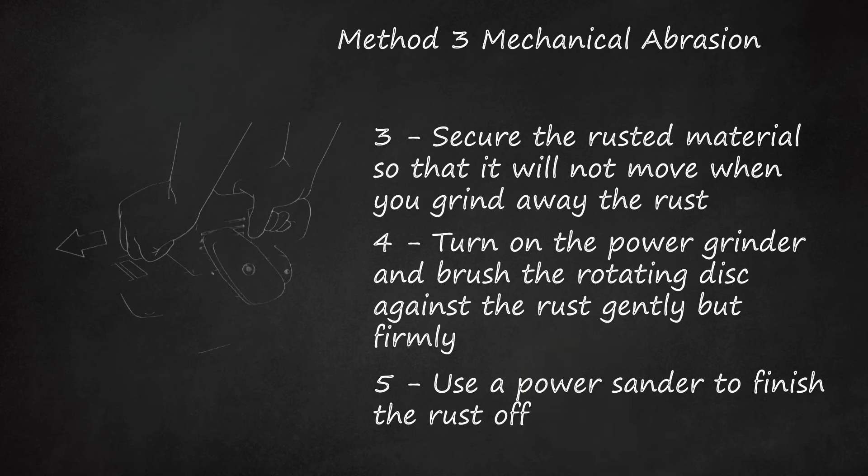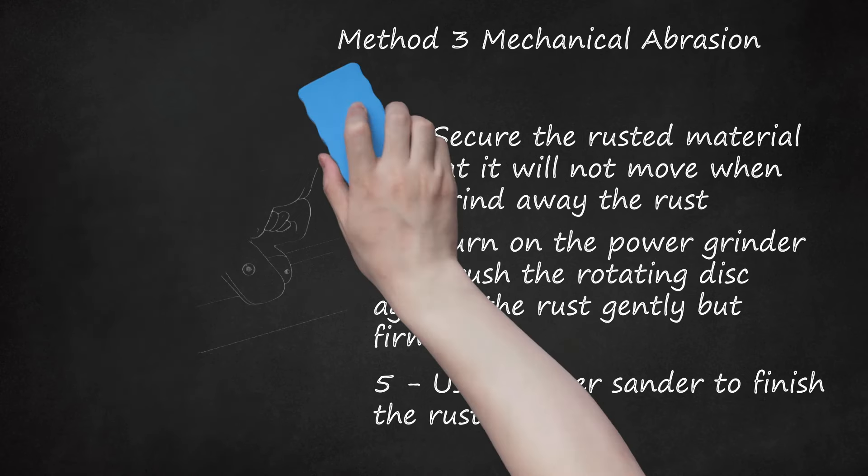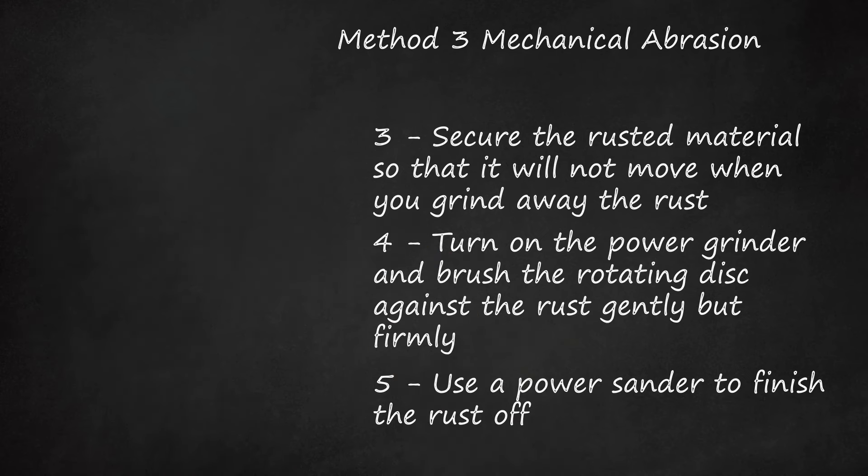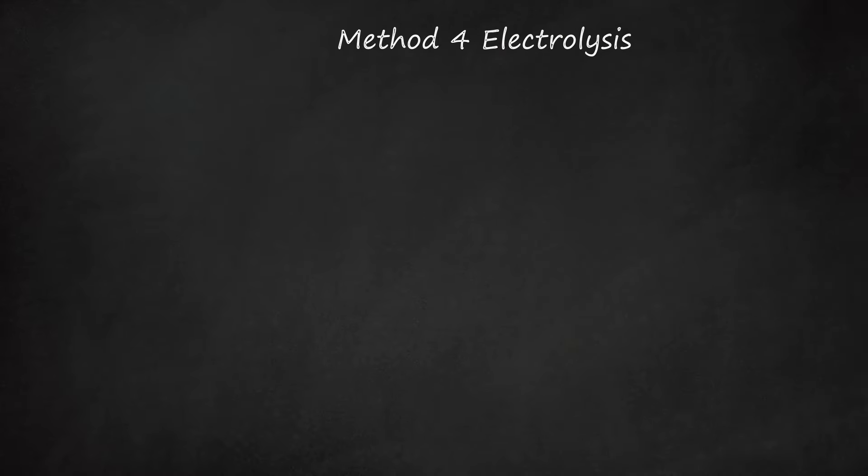Fifth, use a power sander to finish the rust off. If any minor rust remains, sanding should get rid of it. Power sanders work just like power grinders, except that they vibrate a sanding pad rather than rotate a disc. Detail sanders are specifically designed for hard-to-reach places and should be used for rust on corners and uneven surfaces.